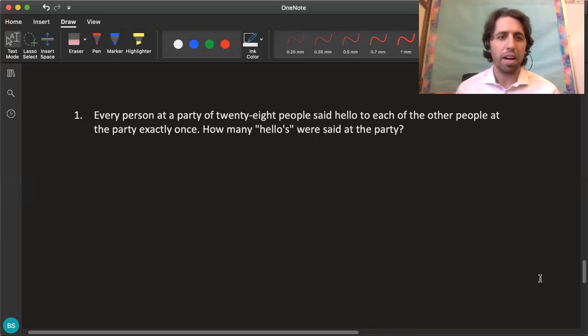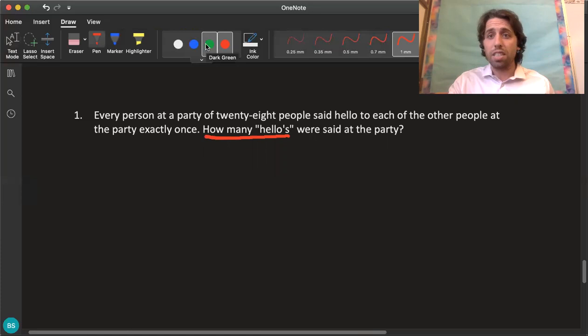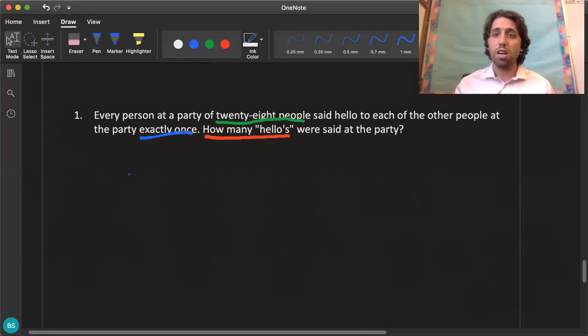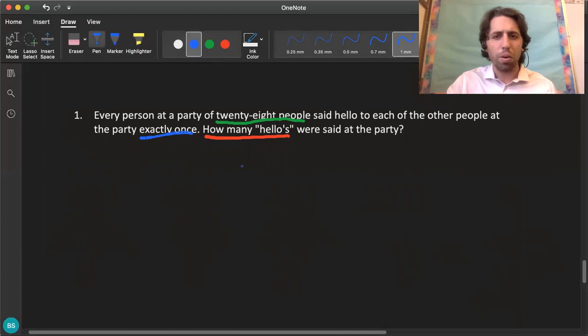The next question says every person at a party of 28 people said hello to each of the other people at the party exactly once, how many hellos were said at the party. So again we need to understand what is being asked here and I know that the main question we're asking is how many hellos. We understand part of the question or part of the problem. Another thing is to realize that we have 28 people, that's important, and they said hello to each of the other people exactly once so I think exactly once means that there's no repeats, I think that's important for us. So we're starting to understand the problem, we just want to know the number of hellos as people interact with one another at this big party. But 28 is kind of a big number for me so what I might do here is I might try and think of a simpler problem.